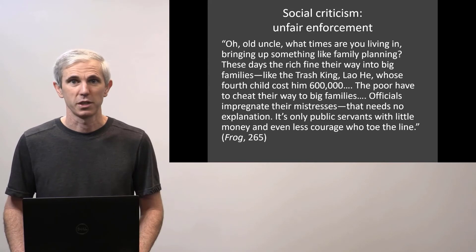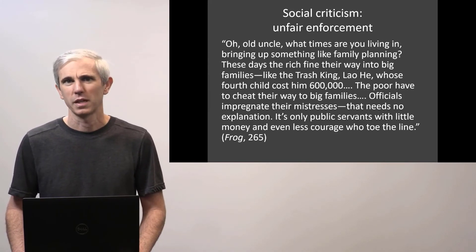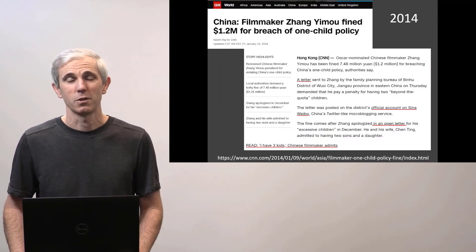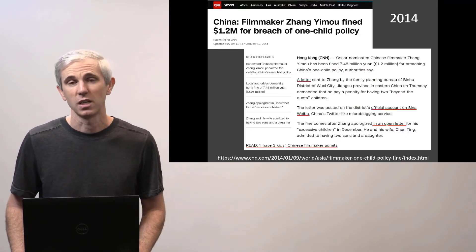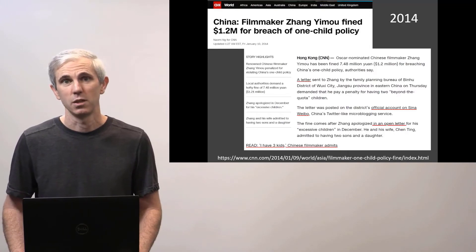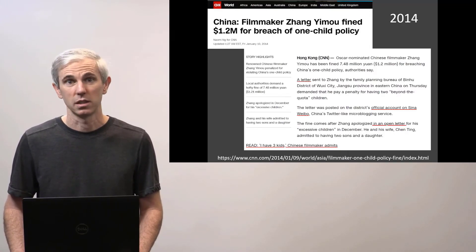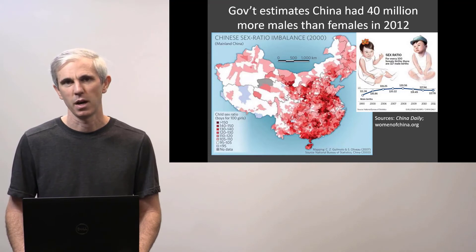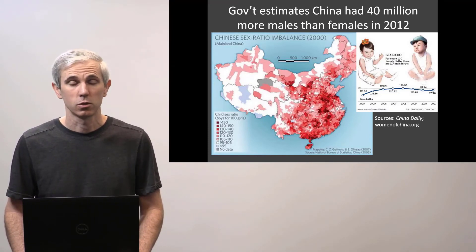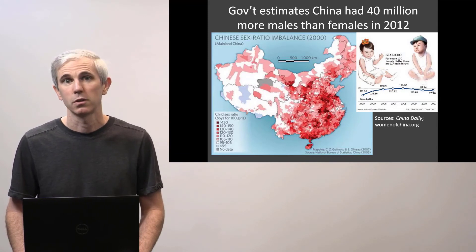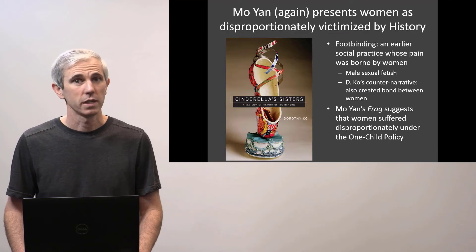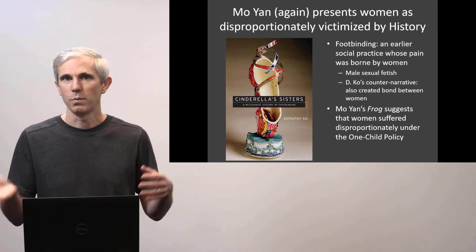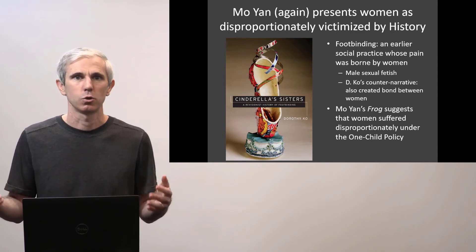In the novel Frog, we have one character expressing that very concern — that officials, people with connections, people with money can have as many children as they want. It's really us poor people who suffer. Moyen could not have known that five years after he wrote his novel, his artistic collaborator, the famous filmmaker Zhang Yimou, and his wife would be fined 1.2 million US dollars for breaching the one-child policy. The Chinese government itself estimates that in 2012, China had 40 million more males than females among the populace as a whole. Moyen's novel Frog presents women as being disproportionately victimized by history.